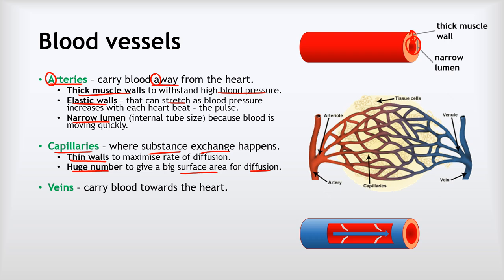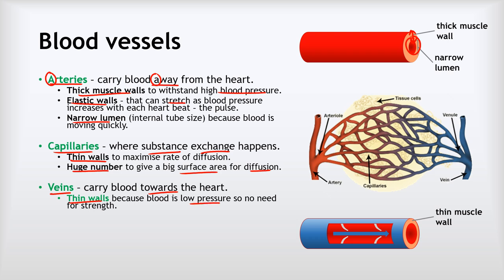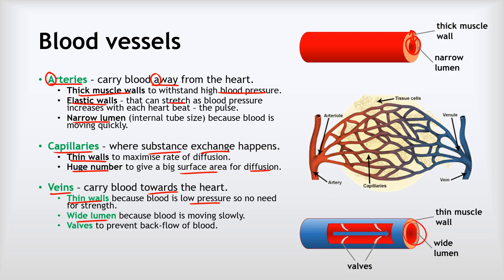The final blood vessel is veins, which carry blood back towards the heart. They have much thinner walls because the blood is at low pressure. They have a wide lumen to accommodate a greater volume of blood moving slowly. And lastly, they have valves to prevent the backflow of blood, because the blood has very low pressure at this point and the valves prevent it from flowing backwards.